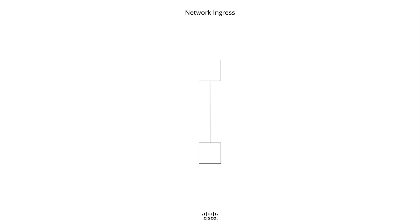Let there be two communicating endpoints: a service consumer and a service provider. The service consumer is not hosted on the Kubernetes cluster — it is external. The service provider is hosted on the Kubernetes cluster — it is internal. Network Ingress denotes the point or means of admission. Furthermore, network Ingress implies directionality, crossing from external to internal.